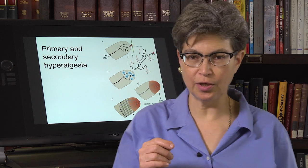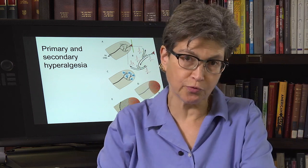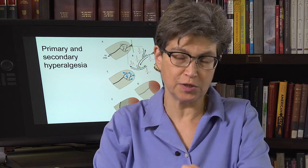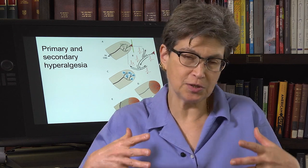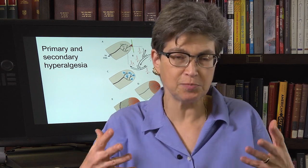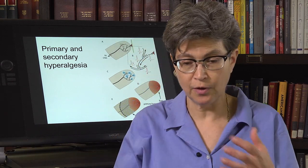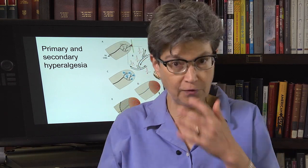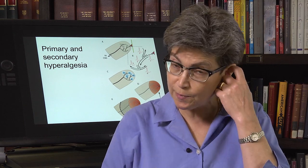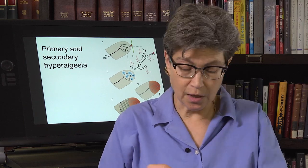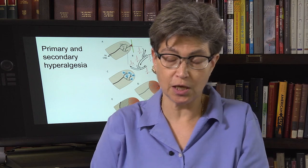The axon reflex is responsible for the acute peripheral response to a noxious stimulus. This completely explains the triple response of Lewis — Thomas Lewis, who was a very famous cardiologist — who talked about the circulatory response to noxious damage.